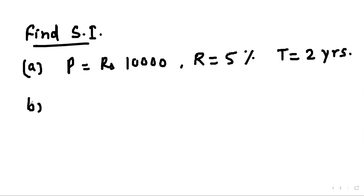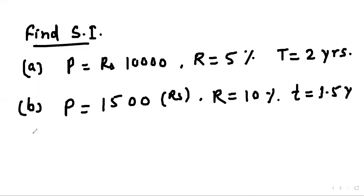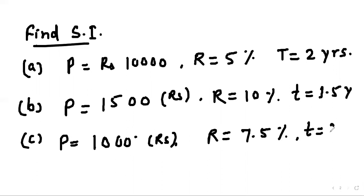Question (a): P = Rs. 10000, R = 5%, T = 2 years. Question (b): P = 1500 rupees, R = 10%, t = 1.5 years. Question (c): P = 1000 rupees, R = 7.5%, t = 2.5 years. You have to find out simple interest and amount also.